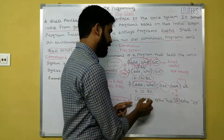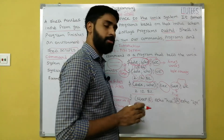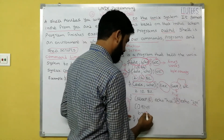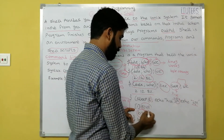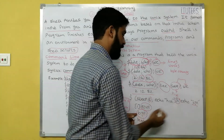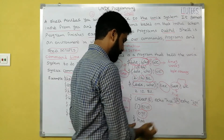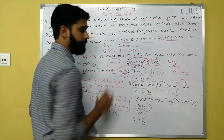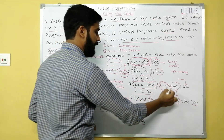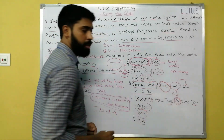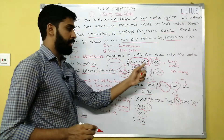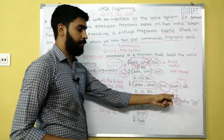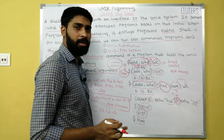Another terminator symbol is the ampersand (&). For example, 'sleep 5 & echo bye' — sleep 5 waits five seconds, but using & runs it as a background process. So it prints 'bye' immediately, and after five seconds it prints 'hi'. The ampersand is used to execute commands in the background.